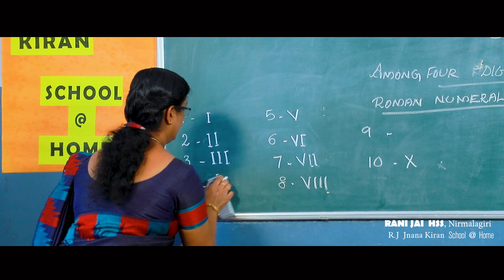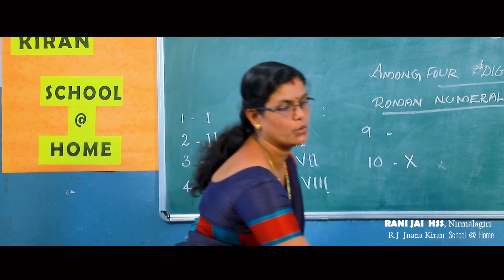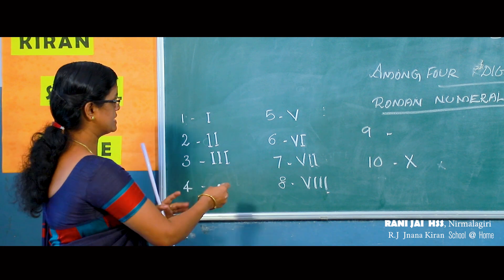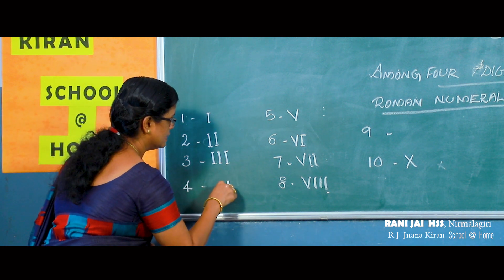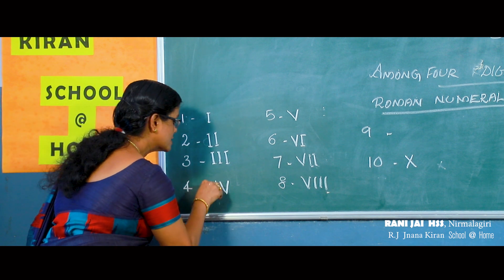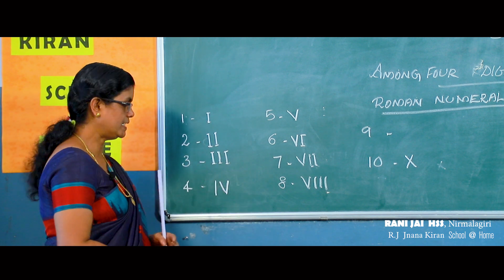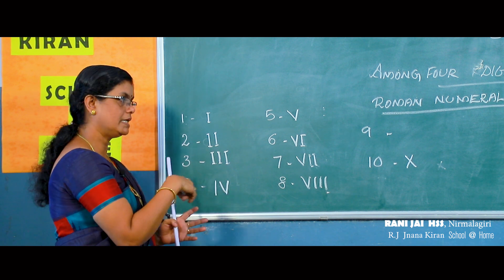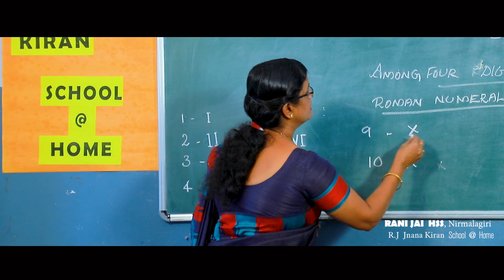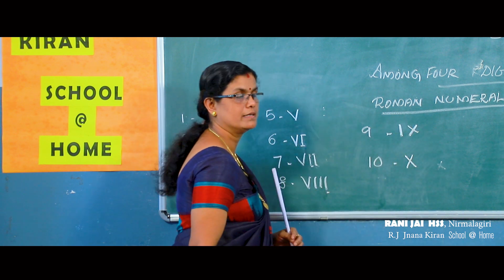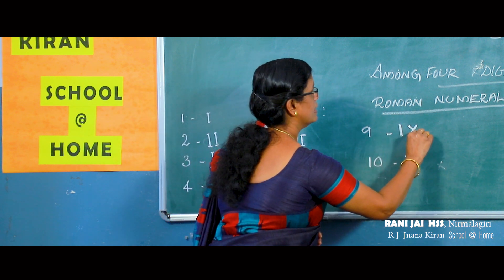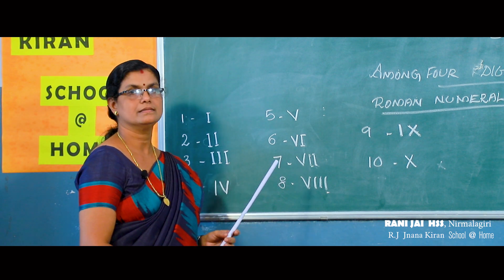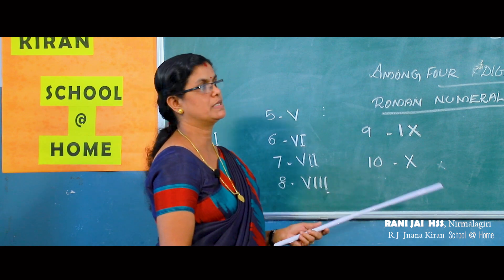We know 4 is 5 minus 1. So let us write 5 here — this is V — minus 1, that is I. We have to place I to the left of V. So 4 is written as IV. Similarly, you can write 9 also: that is 10 minus 1, so I before X — IX. Once more: now let us read the Roman numerals from 1 to 10.